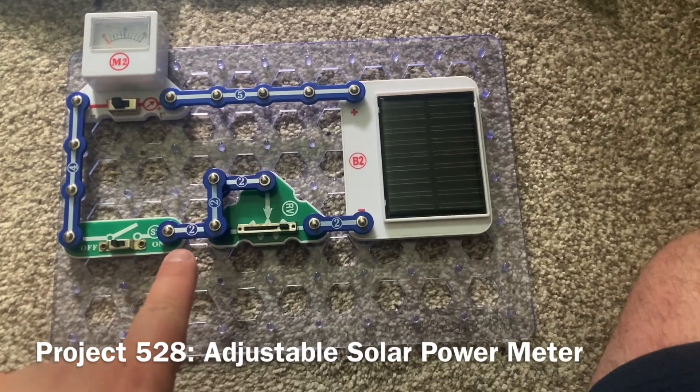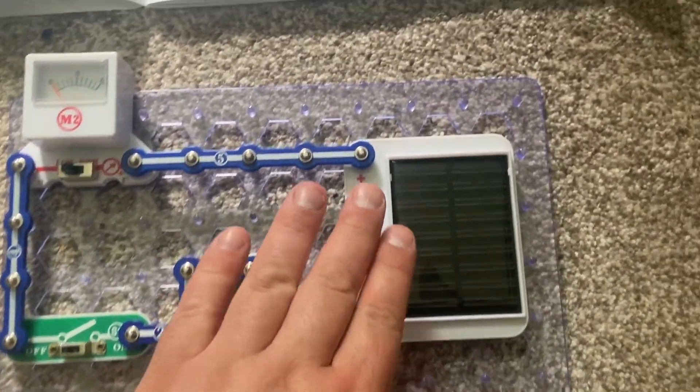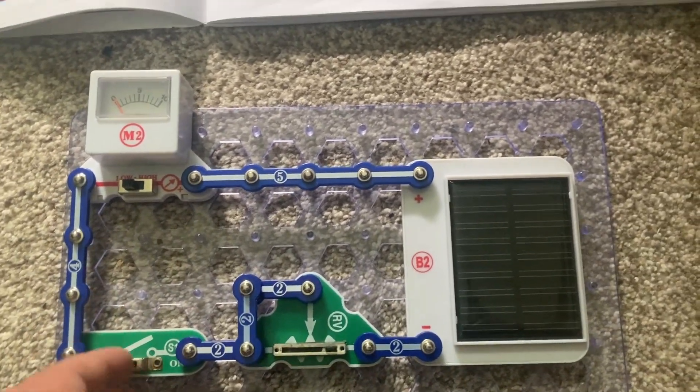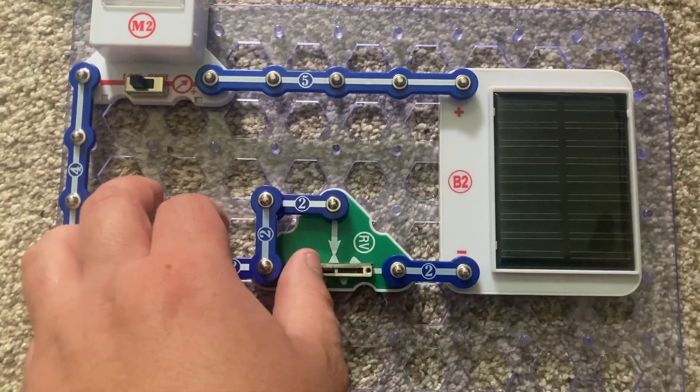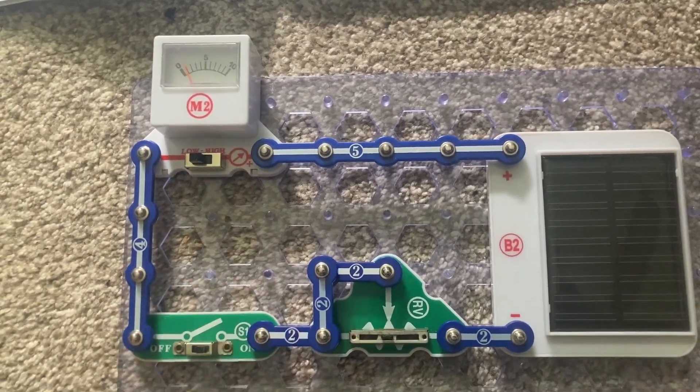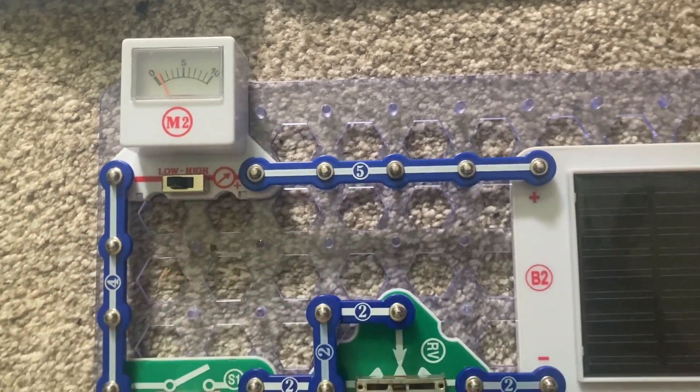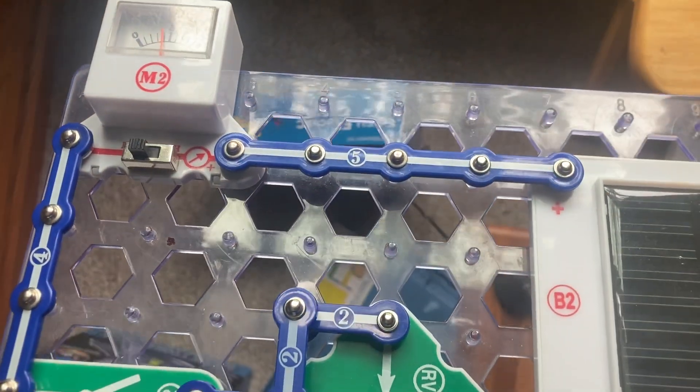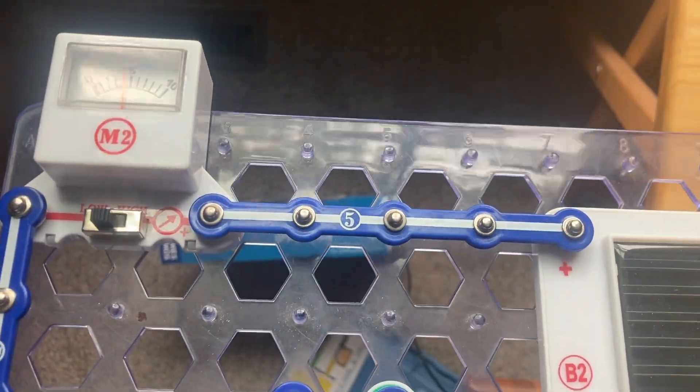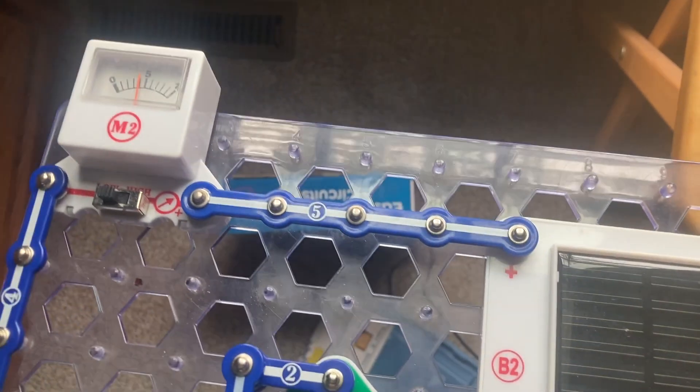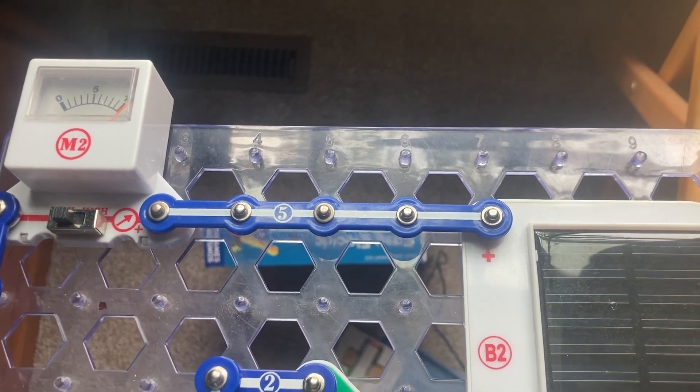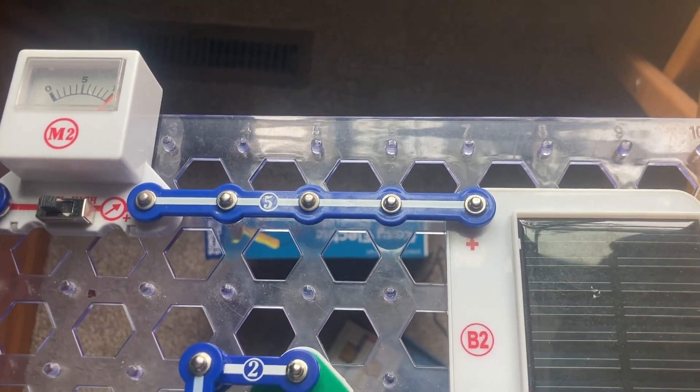This is an adjustable solar power meter. The meter will rely on solar energy to work. And when I turn on the slide switch and have the adjustable resistor about mid-range, you can see how the meter deflects slightly to the right. And now, if I were to expose the circuit to more natural light, you can see how the meter deflects further and further. Now, I'm going to move the adjustable resistor to the right and see how much it moves now. It's at its full greatest range.